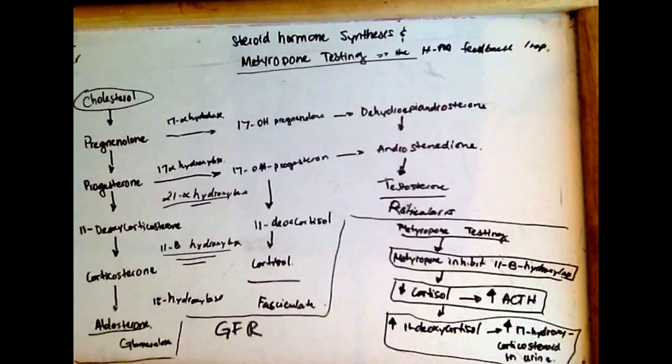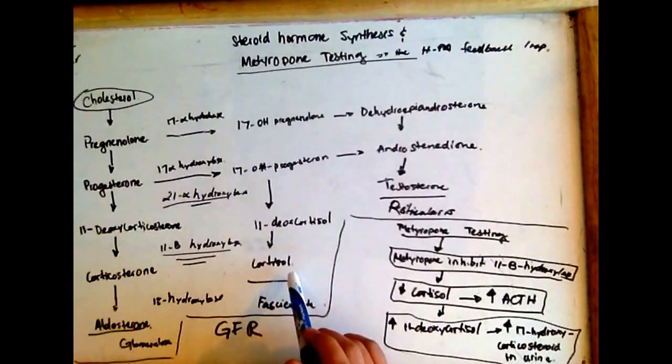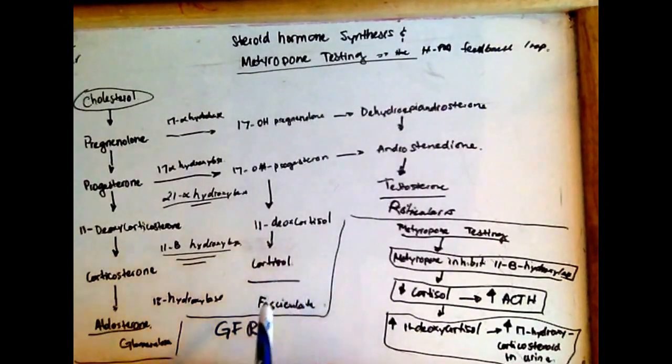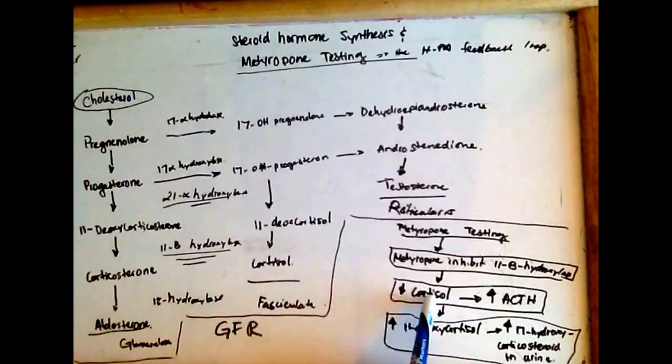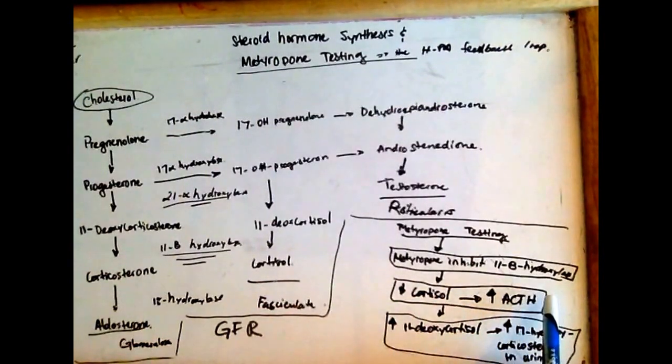11-beta-hydroxylase converts 11-deoxycorticosterone into cortisol. Thus, with metyrapone administration, serum cortisol levels will be reduced because we inhibit cortisol production. This would provide feedback to the pituitary to increase ACTH.